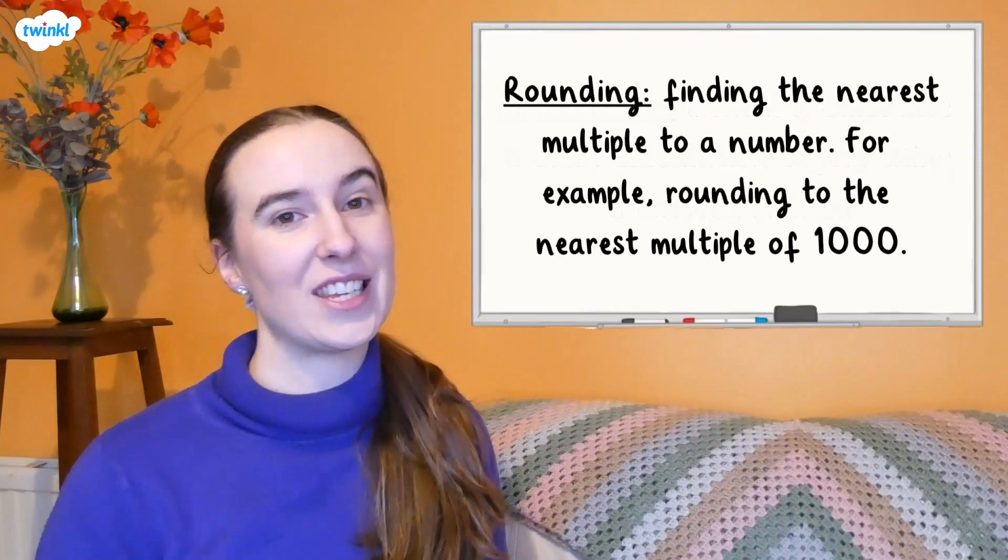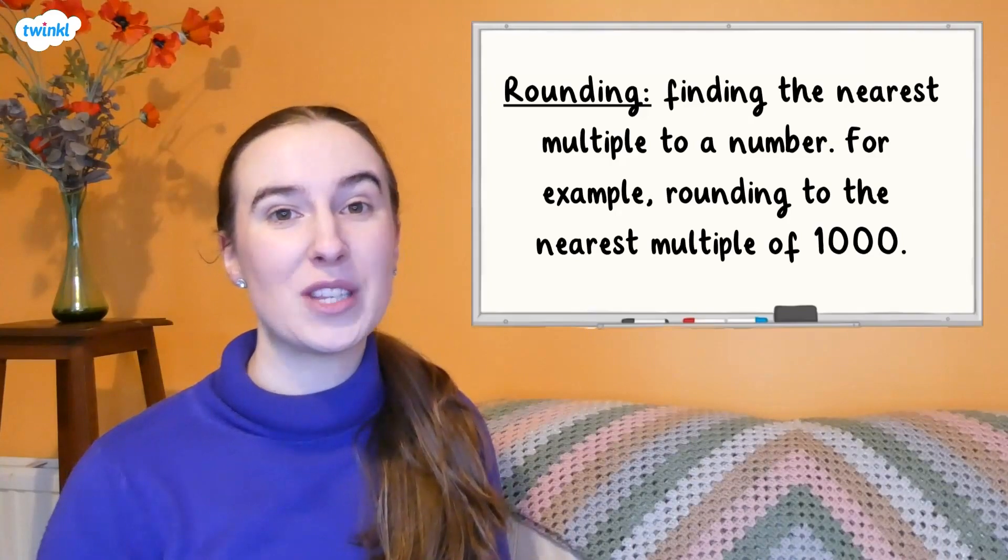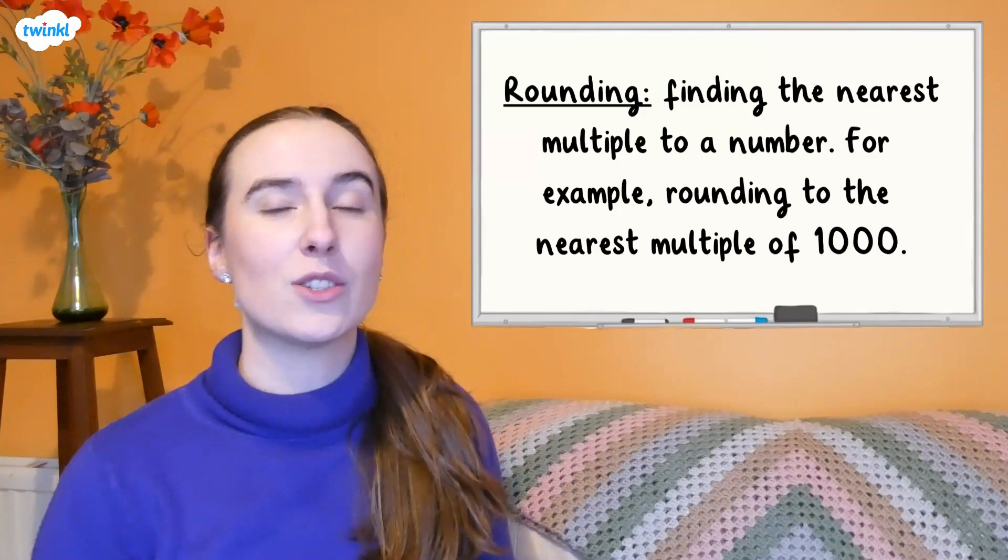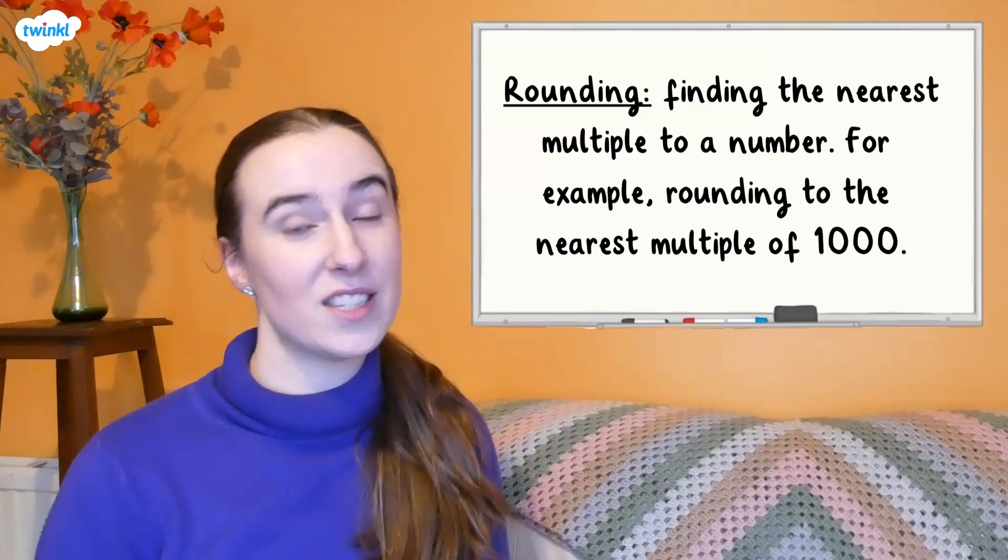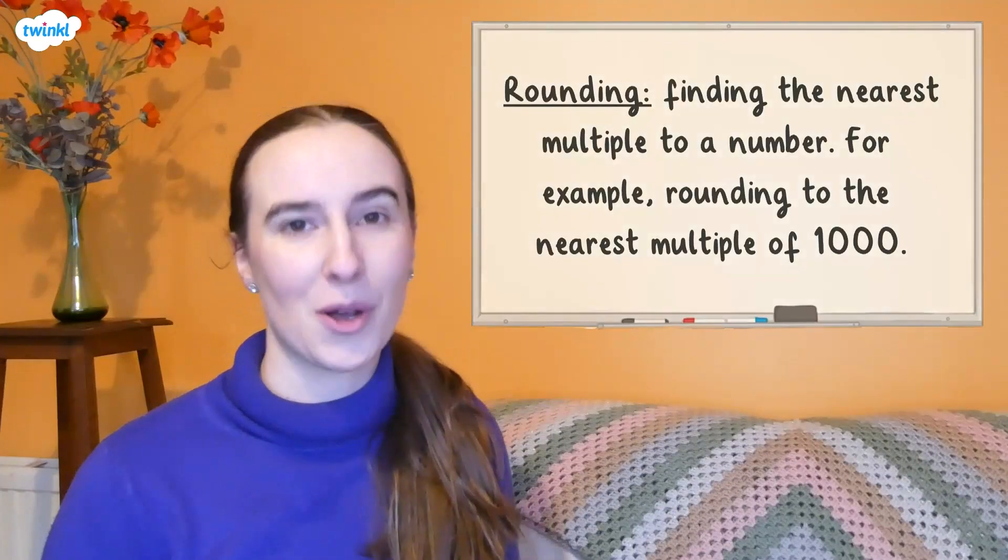To complete a close calculation, we use rounding. When we round a number, we round it to the nearest multiple. So if we're rounding to the nearest thousand, we are rounding it to the nearest multiple of a thousand. If rounding to the nearest ten thousand, we are rounding it to the nearest multiple of ten thousand, and so on.